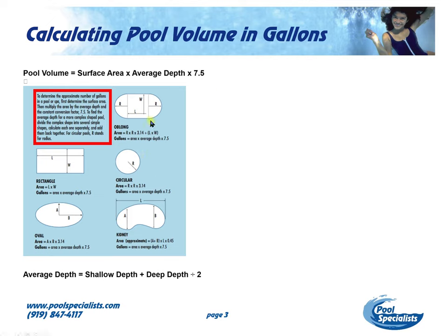If you have an oblong pool, you're going to break it into a square section and then your circular area. Oval pools aren't very complicated, but unfortunately most people have kidney-shaped pools or freeform pools or something of that nature, and they get a little bit more complicated. We don't need to get the exact number of gallons — we just want to get close.